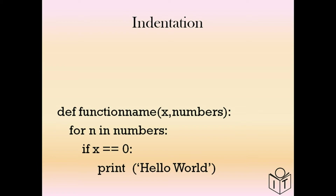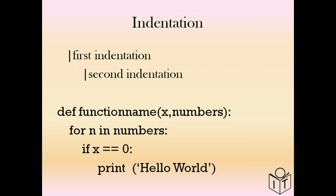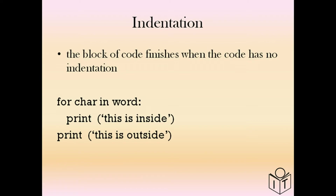When using indentation, you might have many blocks of code inside each other, so you don't just have one indentation level — you can have more. In this example of a function, we have a for loop starting at the first indentation point. Inside the for loop is an if statement starting at the second indentation point, and inside the if statement is a print statement starting at the third indentation point.